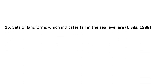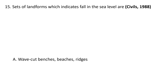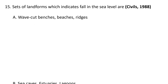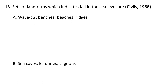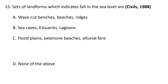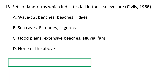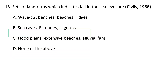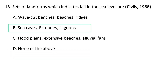Next question: Sets of landforms which indicate a fall in sea level are — A) wave-cut benches, beaches, ridges, B) sea caves, estuaries, lagoons, C) floodplains, extensive beaches, alluvial fans, D) none of the above. The correct answer is B — sea caves, estuaries, and lagoons indicate a fall in sea level.